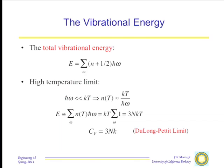Plugging in, the total energy turns out to be 3NkT, where N is the number of atoms and 3N is the total number of terms in the summation — that is, the total number of modes. So in the high-temperature limit, we can solve the problem in quantum mechanics regardless of what the dispersion relation is. As long as kT is much greater than the biggest frequency, E = 3NkT and C_v = 3Nk.